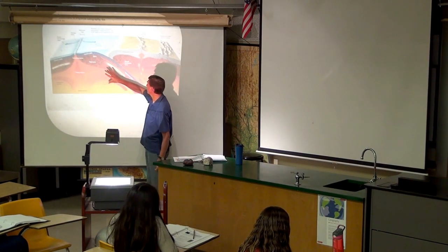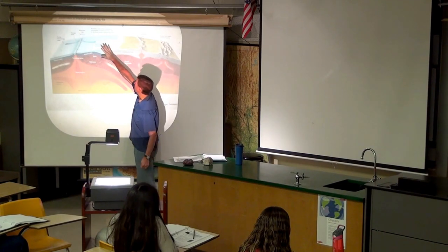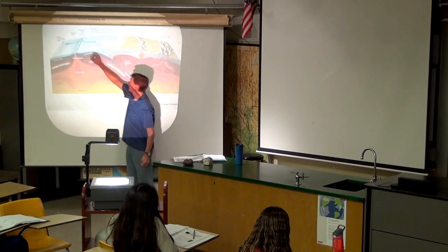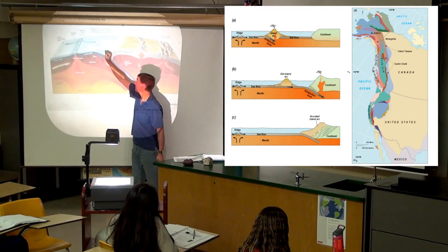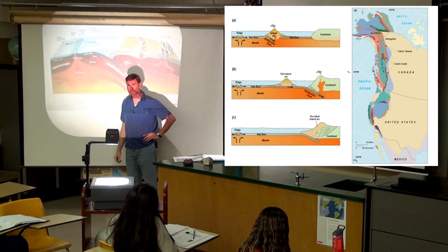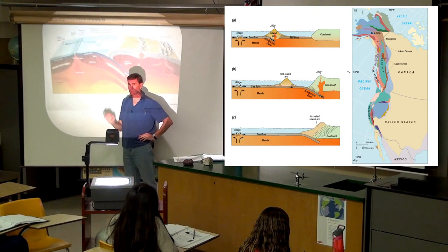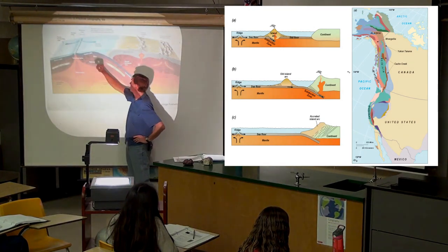Another important thing about subduction is that it does scrape off sediments from the bottom of the ocean floor. If there's an island arc — maybe an old island chain — that's going to get added to the edge of the continent. Remember what we call that? Accretion. That's an important part of California's story, all the way up through Alaska.